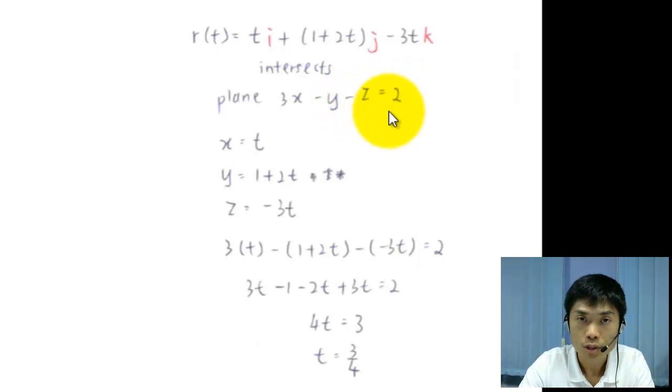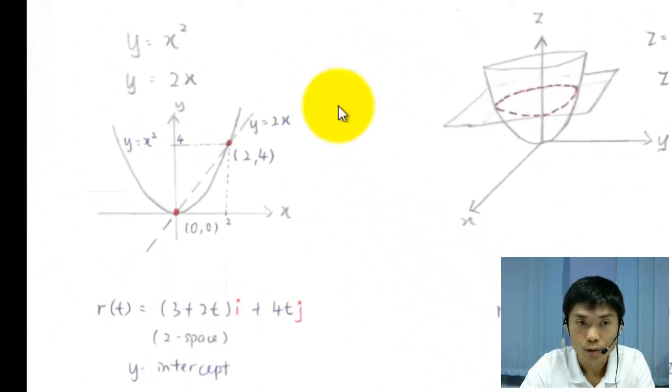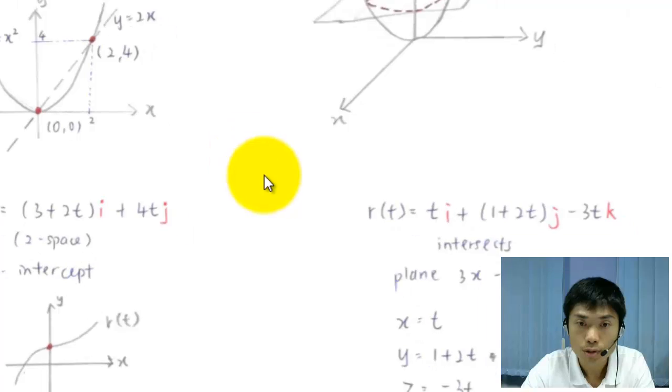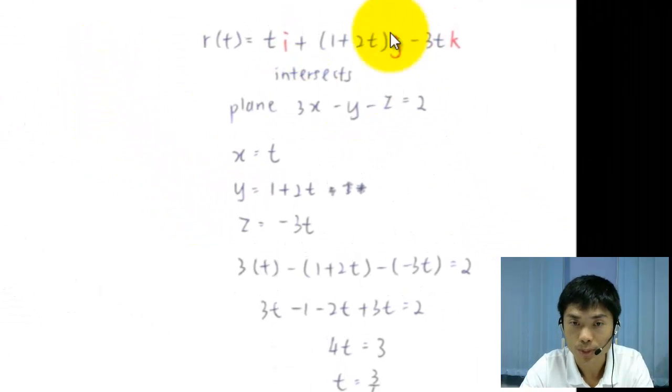So how are you going to solve it? Recall back from the 2-space solution here. How are you going to find out the intersection point? It's actually when the x and the y values of the first equation are similar to the second equation, right?